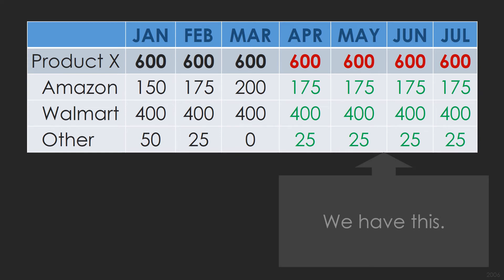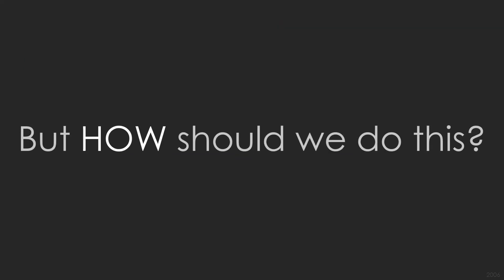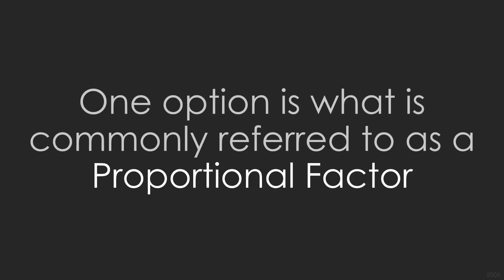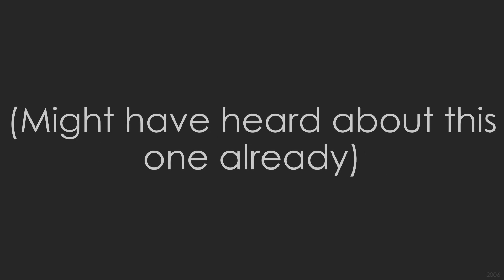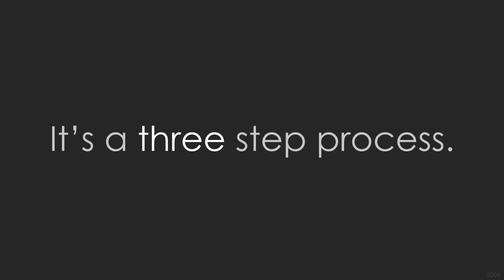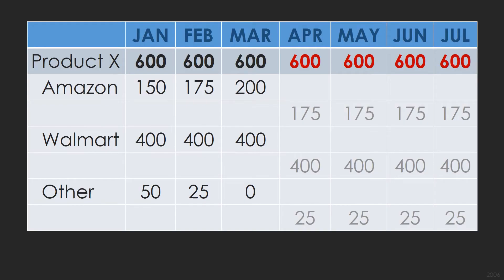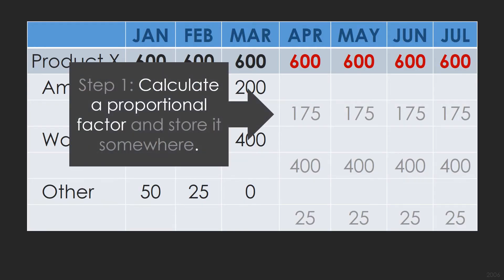We have this. But how should we do this? One option is what is commonly referred to as a proportional factor. You might have heard about this one already. It's a three step process. Step one: calculate a proportional factor and store it somewhere.